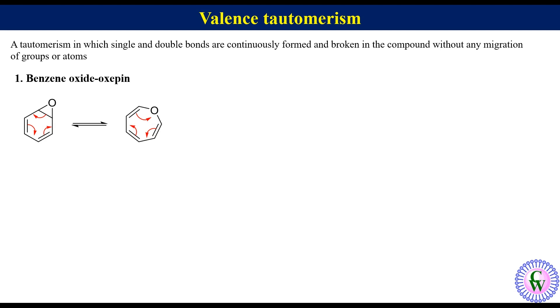Second example is homotropylidene. It undergoes Cope rearrangement to produce equivalent structure.